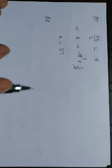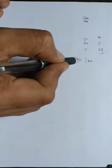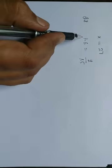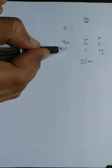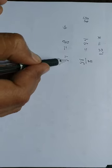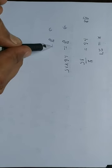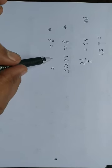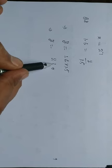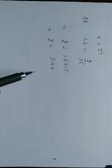Question number 8: 1.6 is equal to y upon 1.5. We directly cross multiply. So y is equal to 1.6 into 1.5. Calculating: 16 into 15 gives 240, and placing the decimal gives y equal to 2.40. This is the answer.